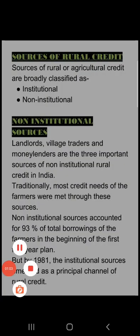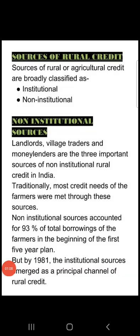The sources of Rural Credit are broadly classified into two categories. These two categories are institutional and non-institutional. So rural credit sources have been placed into two groups: institutional sources and non-institutional sources.